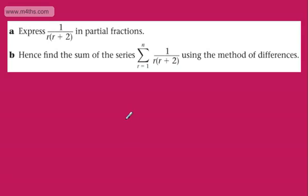In this one, it says: express 1 over r(r+2) in partial fractions, and hence find the sum of the series from r equals 1 to n of 1 over r(r+2) using the method of differences.